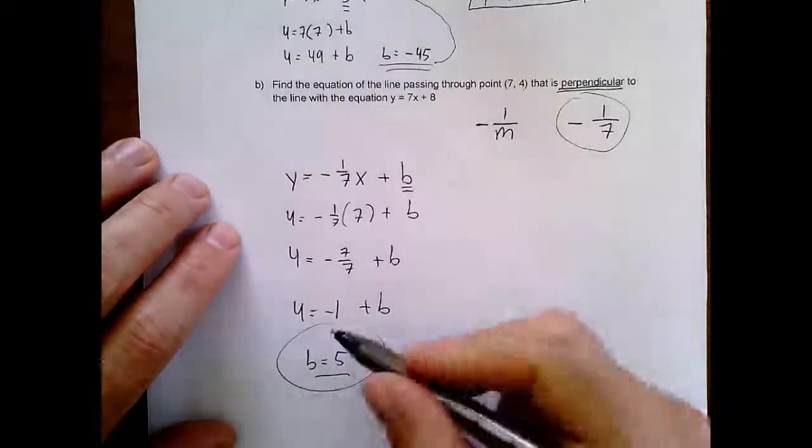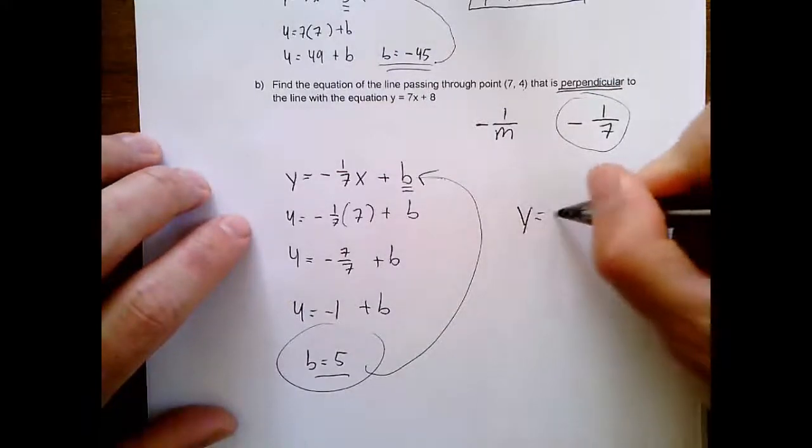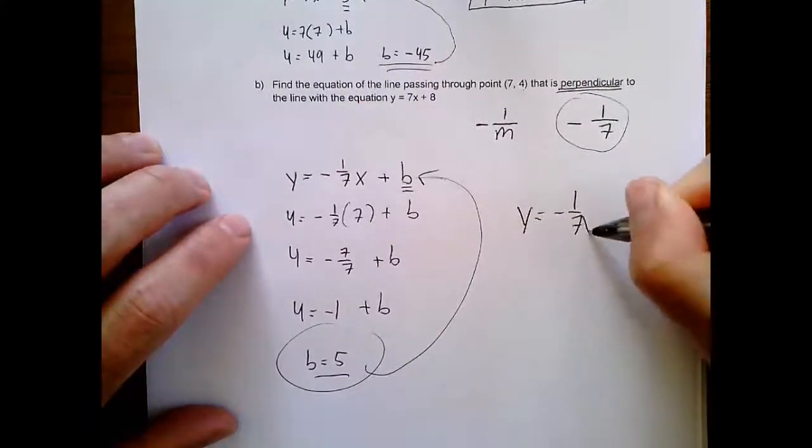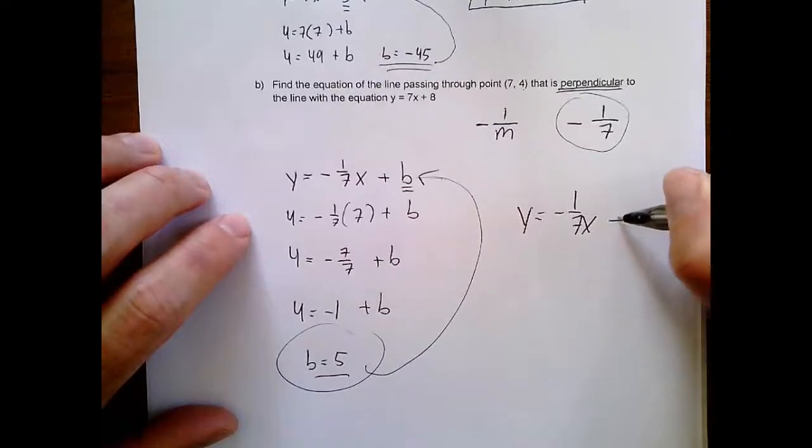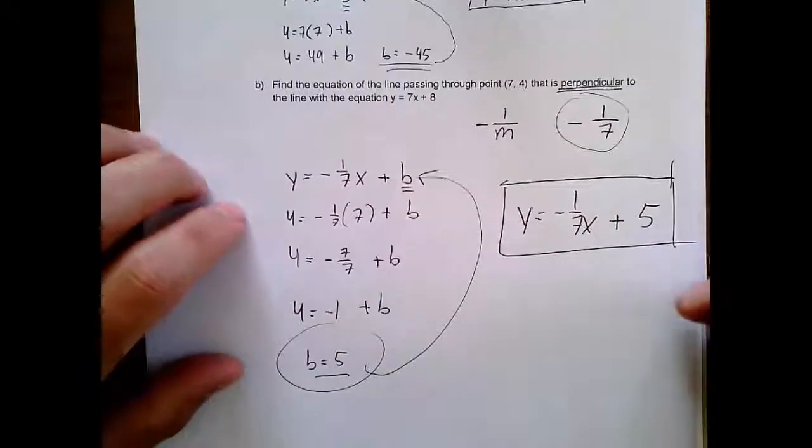And so now we just plug this in. And we're done. So your answer is y equals negative 1 seventh x plus 5. Voila! That's your perpendicular line. And you did it!